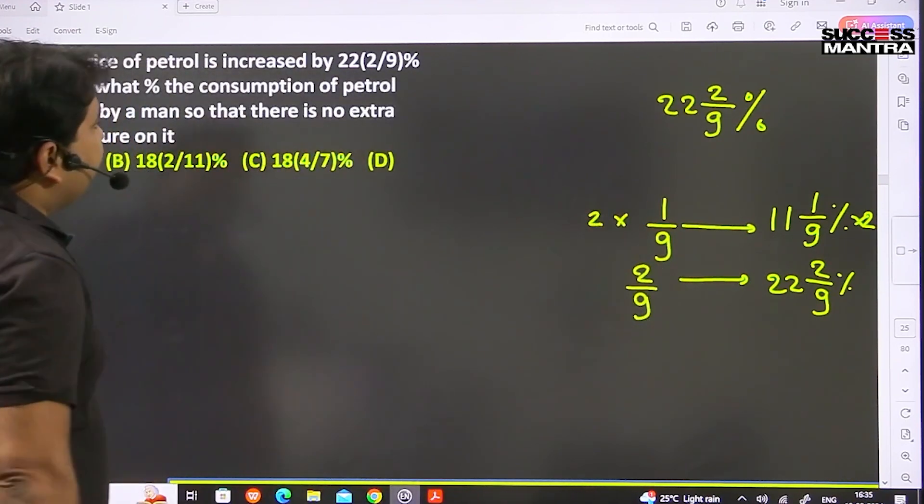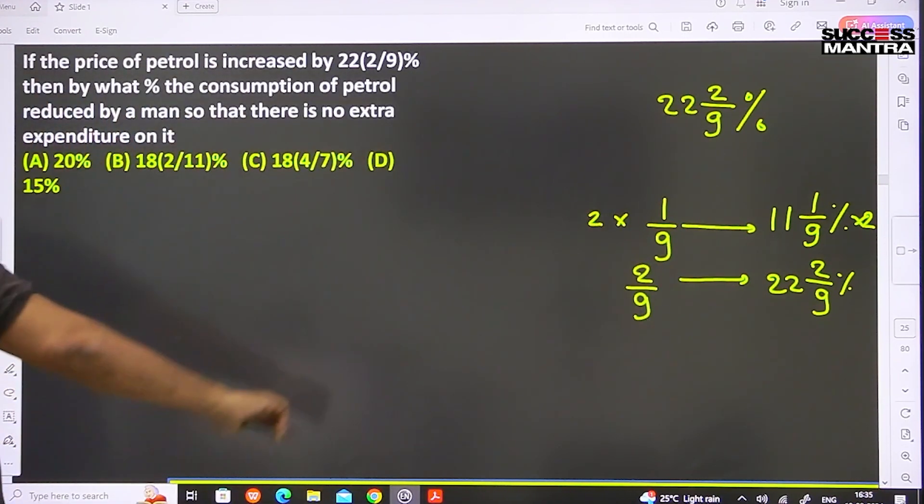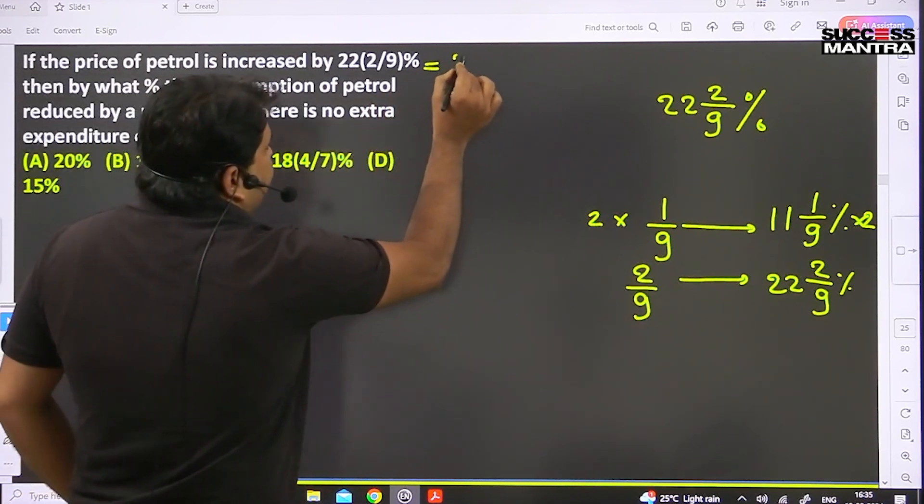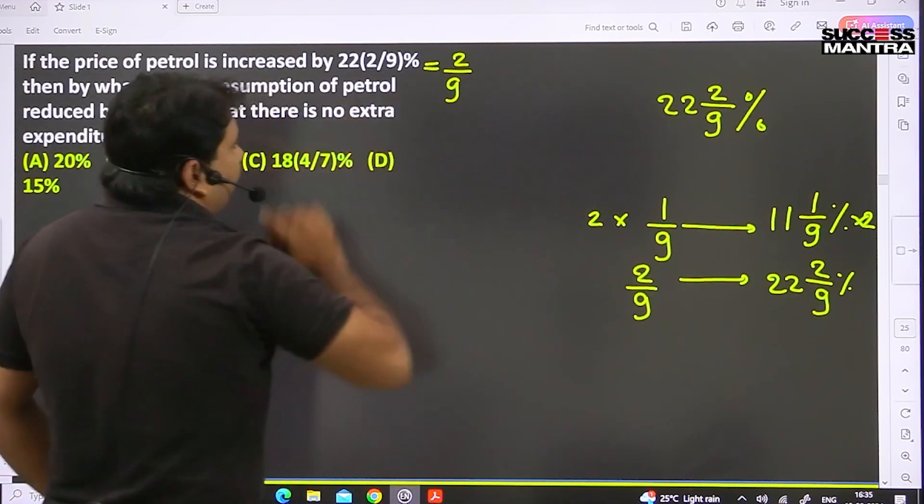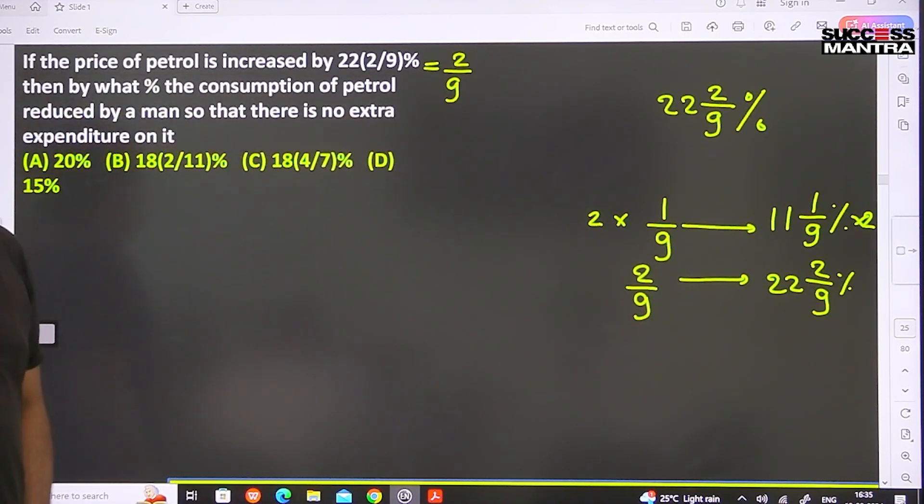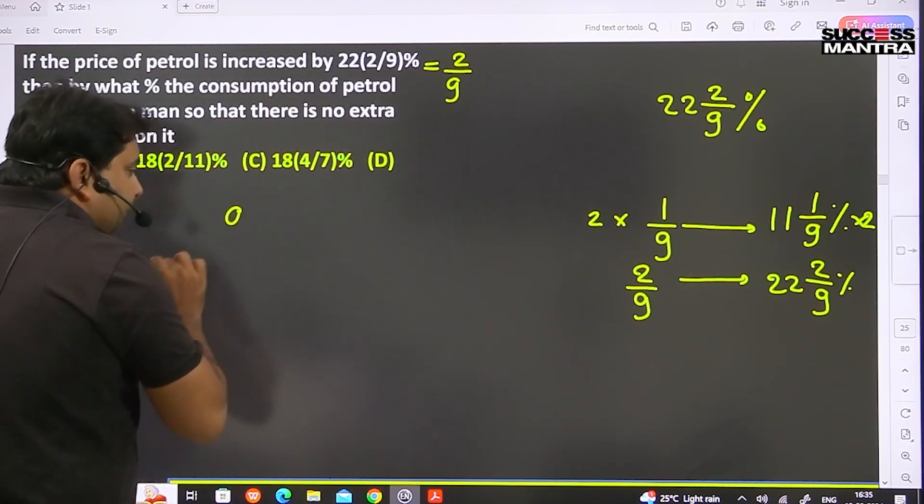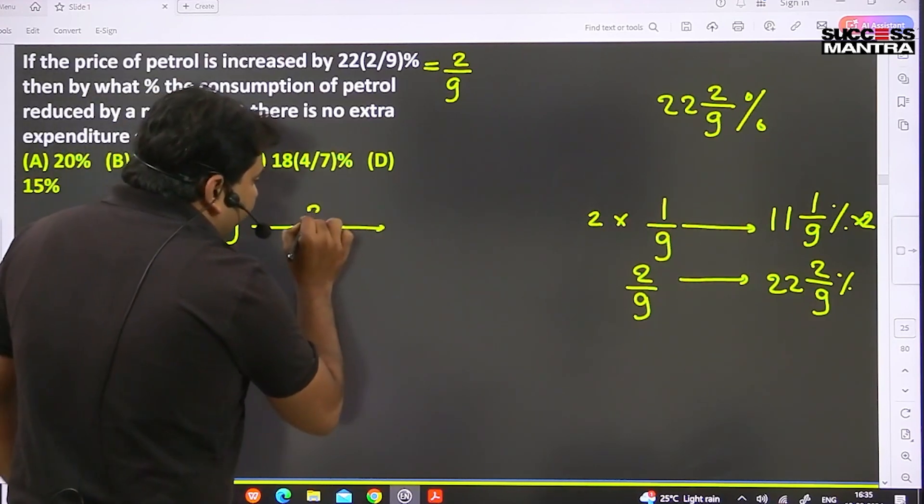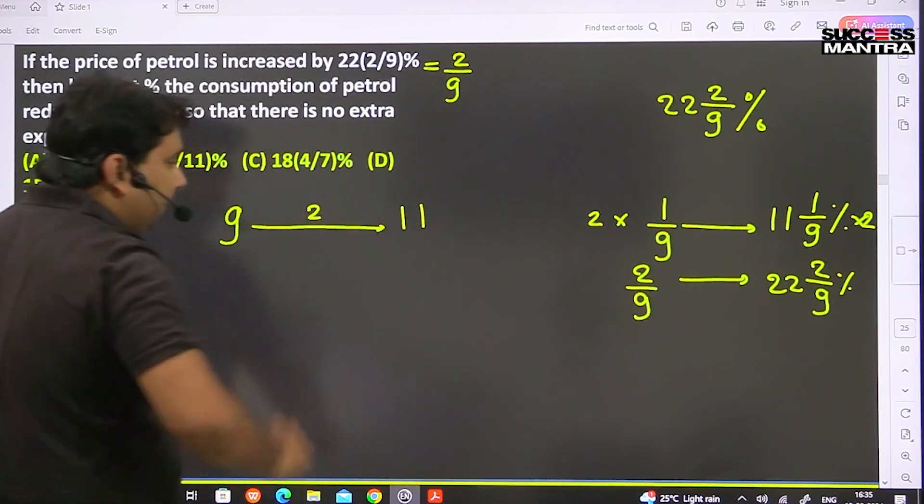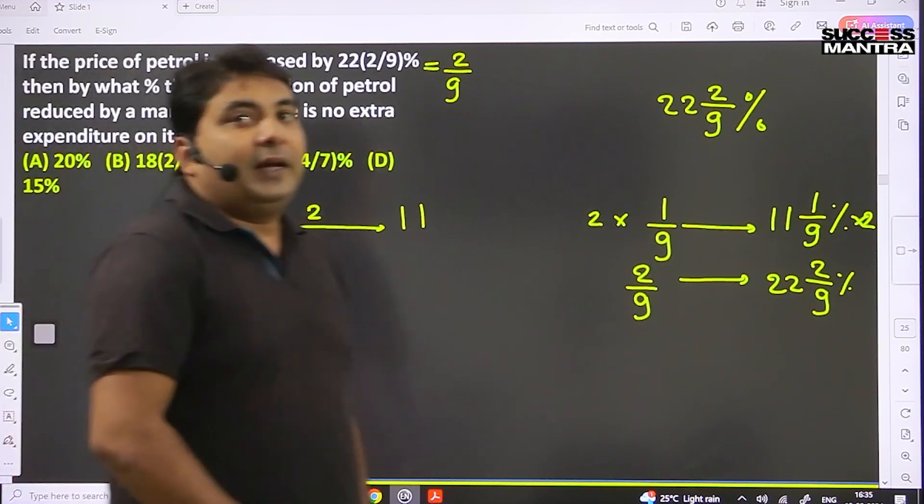If you increase the price of petrol by 22 2/9 percent, that means 2/9. What does this mean? If the price of petrol was 9, then it has increased by 2, meaning now it has become 11. It was 9 before, now it has become 11.